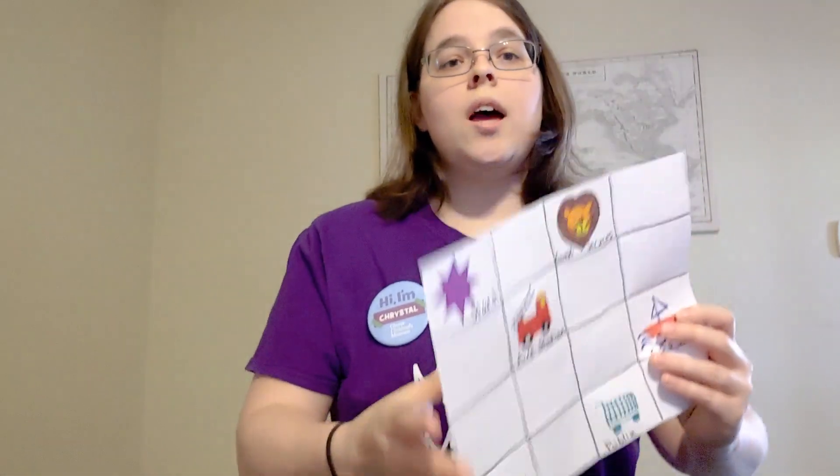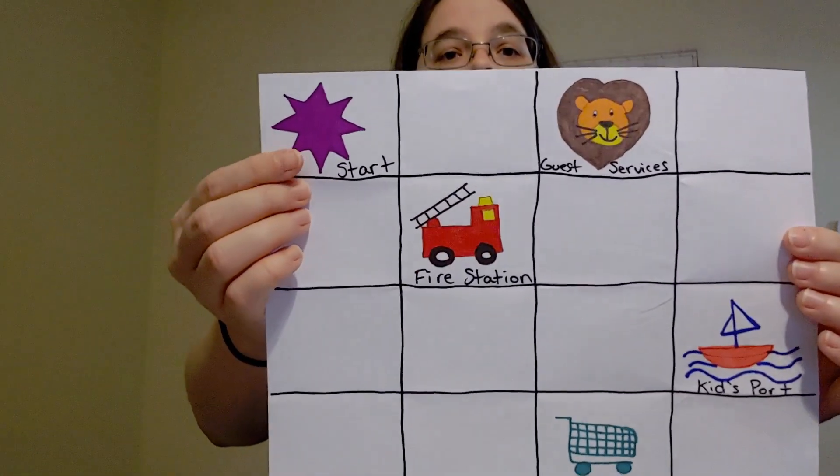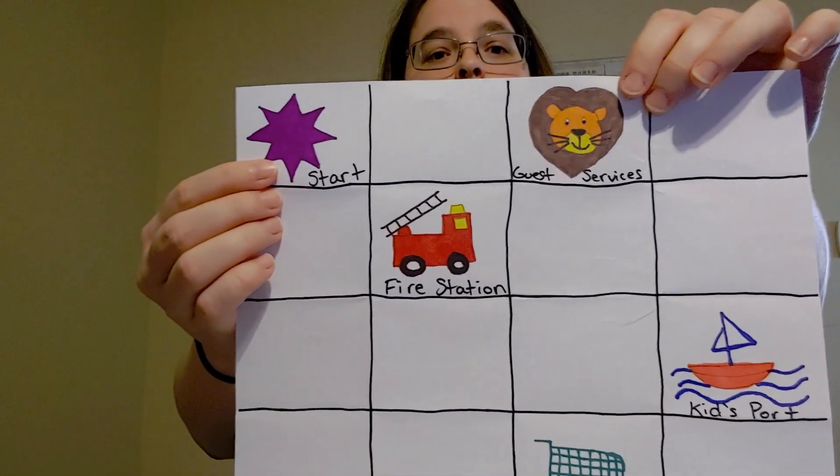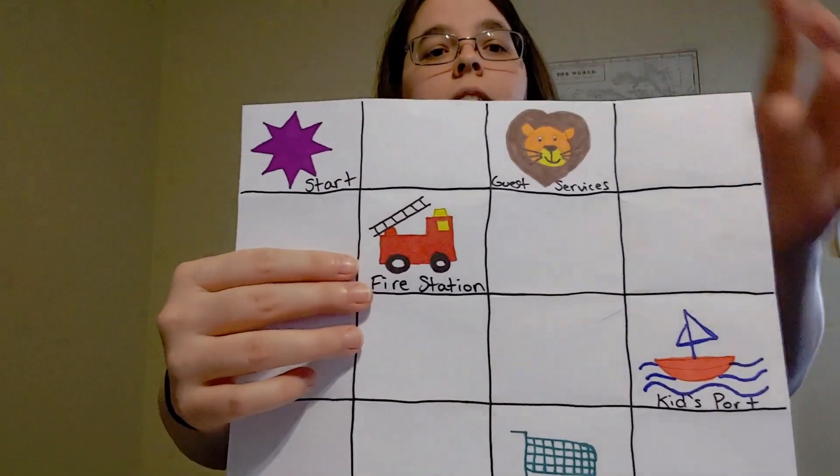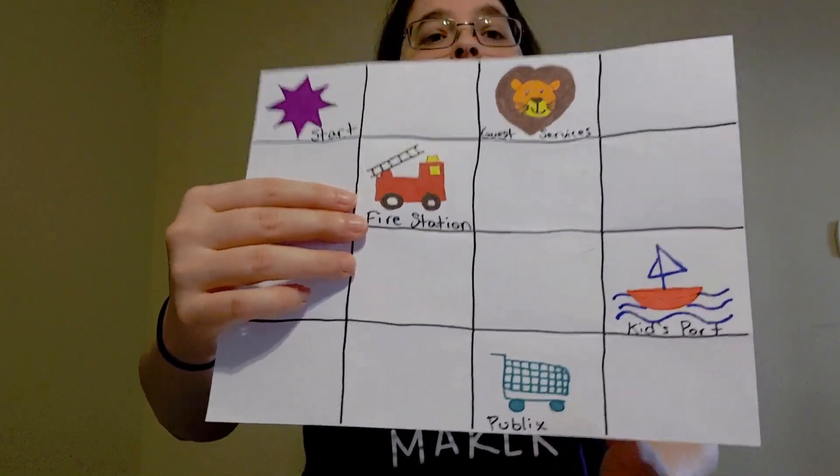So you'll notice on my board right here we've got a few spaces. First we're going to have a start space, and then we're going to have a guest services space, a fire station, Kidsport, and Publix. Now once you have those spaces labeled, we'll be able to begin the activity for today's board game. We're going to be following a story where we follow a friend named Billy through the Glazer Children's Museum on an adventure. So get ready for the story, okay?